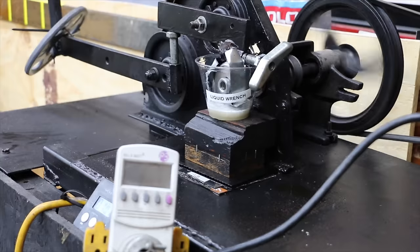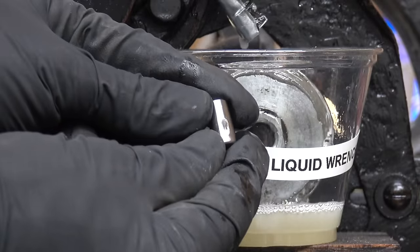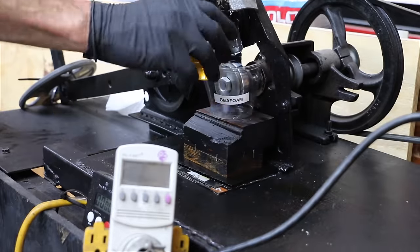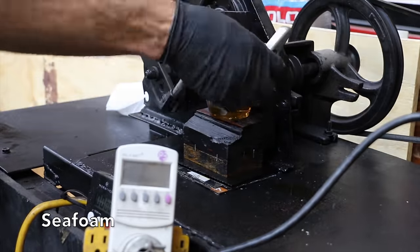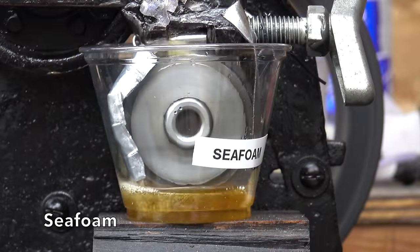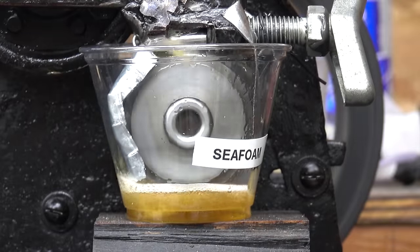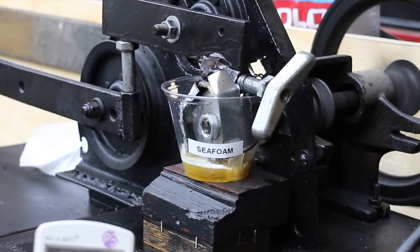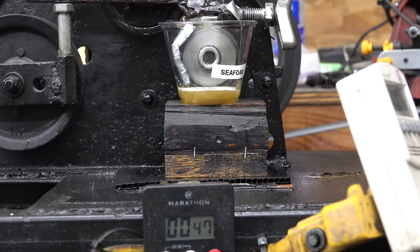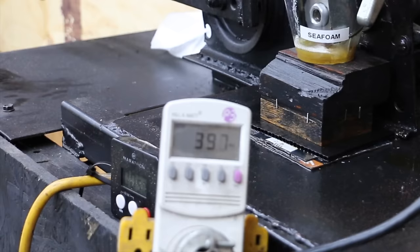30 milliliters of each product will be added into the test cup, and each test will last right at 60 seconds. At the end of the test, the size of the wear scars will be compared. We'll also watch the amount of watts for the test device. If your product provides superior lubrication, the amount of watts required will be lower, compared to products that don't have as much film strength.